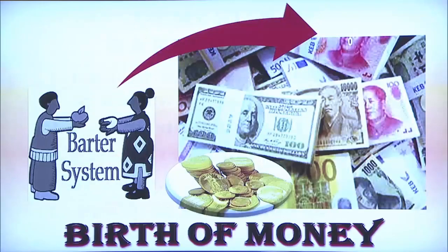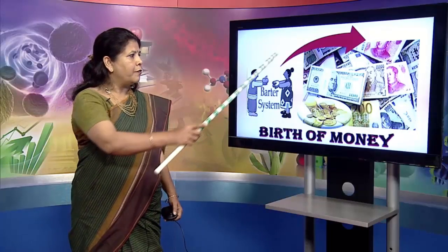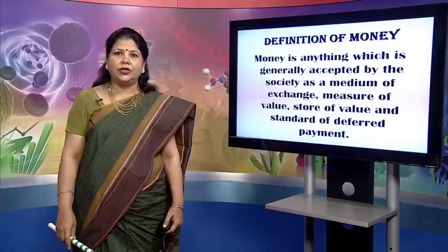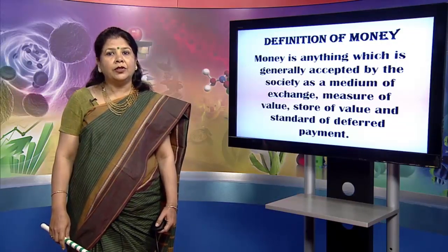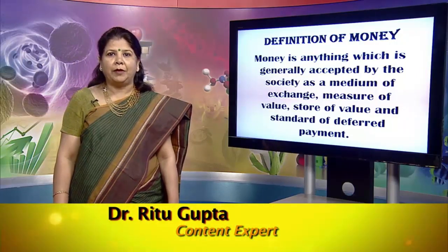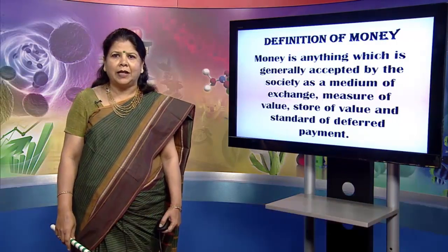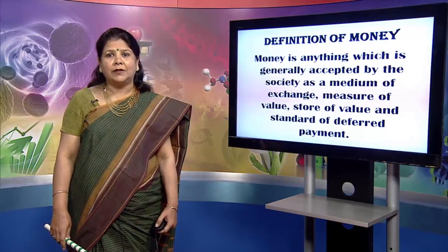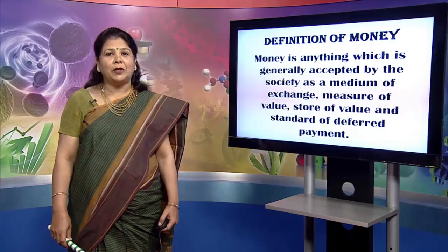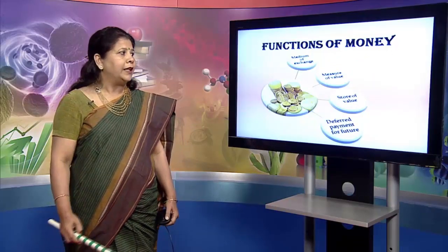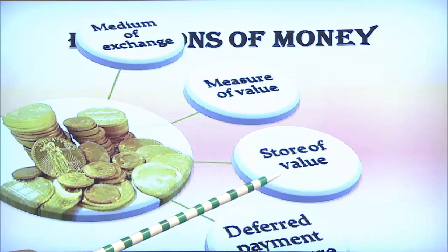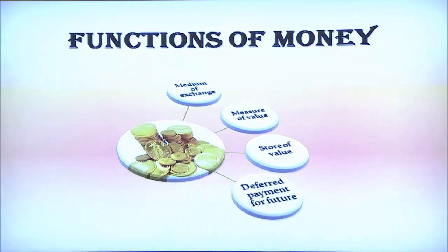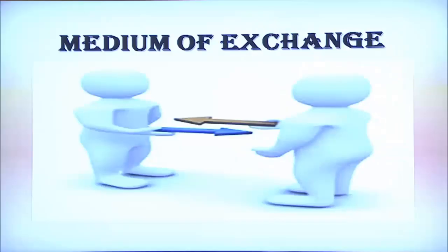The barter system had all these problems, and hence the way out was the birth of money. Money is anything which is generally accepted by the society as a medium of exchange, measure of value, store of value, and standard of deferred payment. There is a poem: 'Money has measures, for a medium of value, a standard, a store' — which helps remember the functions of money.